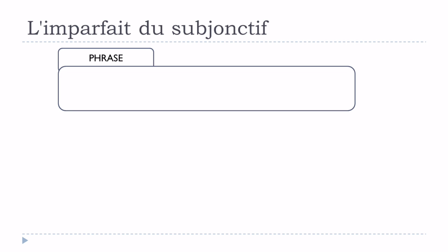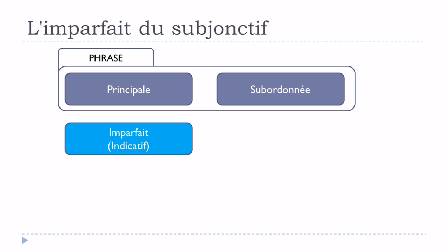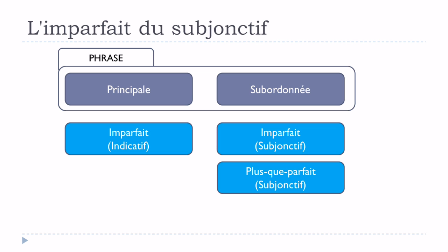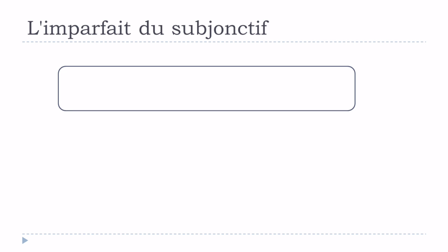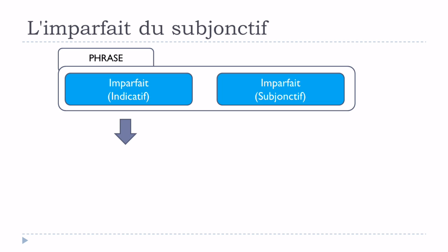Now let's look at sentence structure. We have la principale and la subordonnée. If we have l'imparfait de l'indicatif in la principale, then normally we should put l'imparfait du subjonctif or le plus-que-parfait du subjonctif in la subordonnée. That is the way it should normally be done.